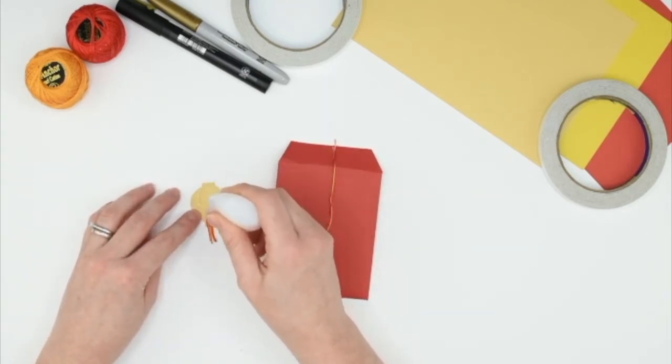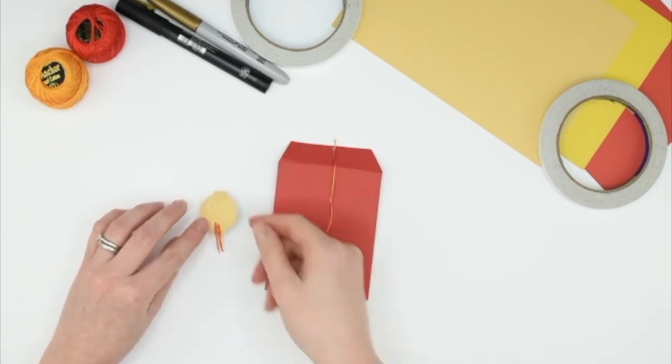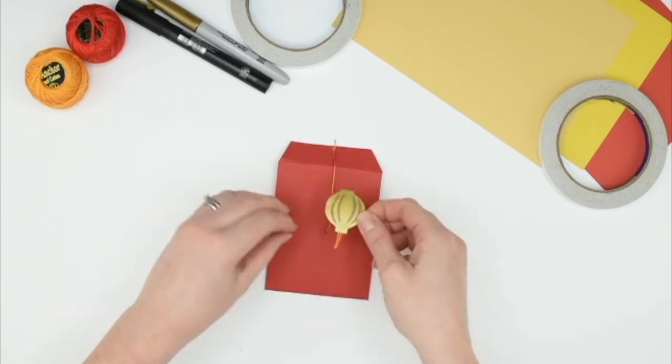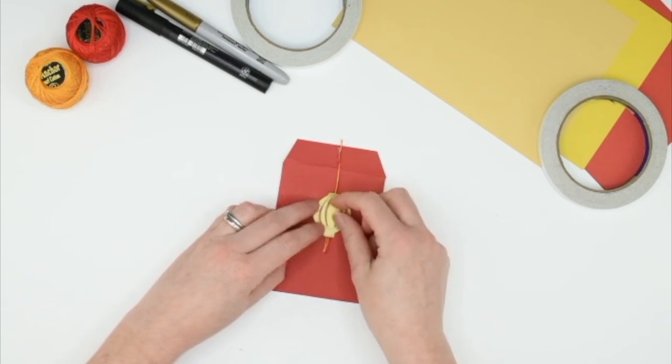Once you have that there, you can then go back to your lantern, add some glue onto the back, turn that over and pop that onto the hanging thread.